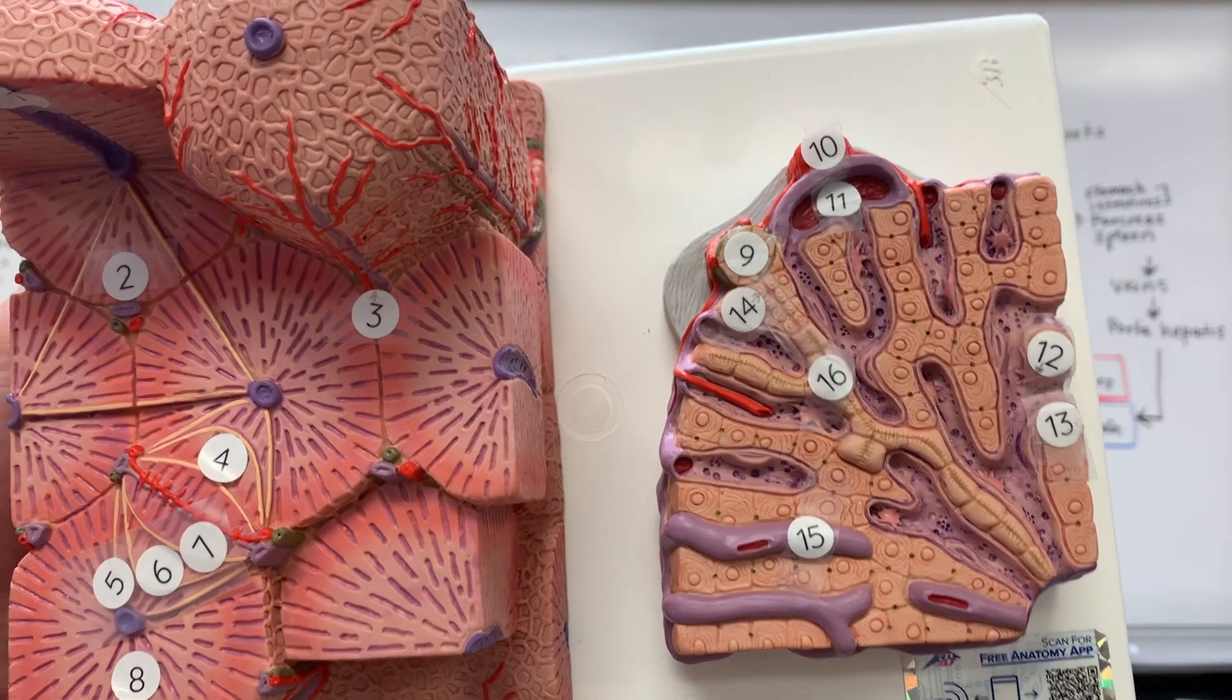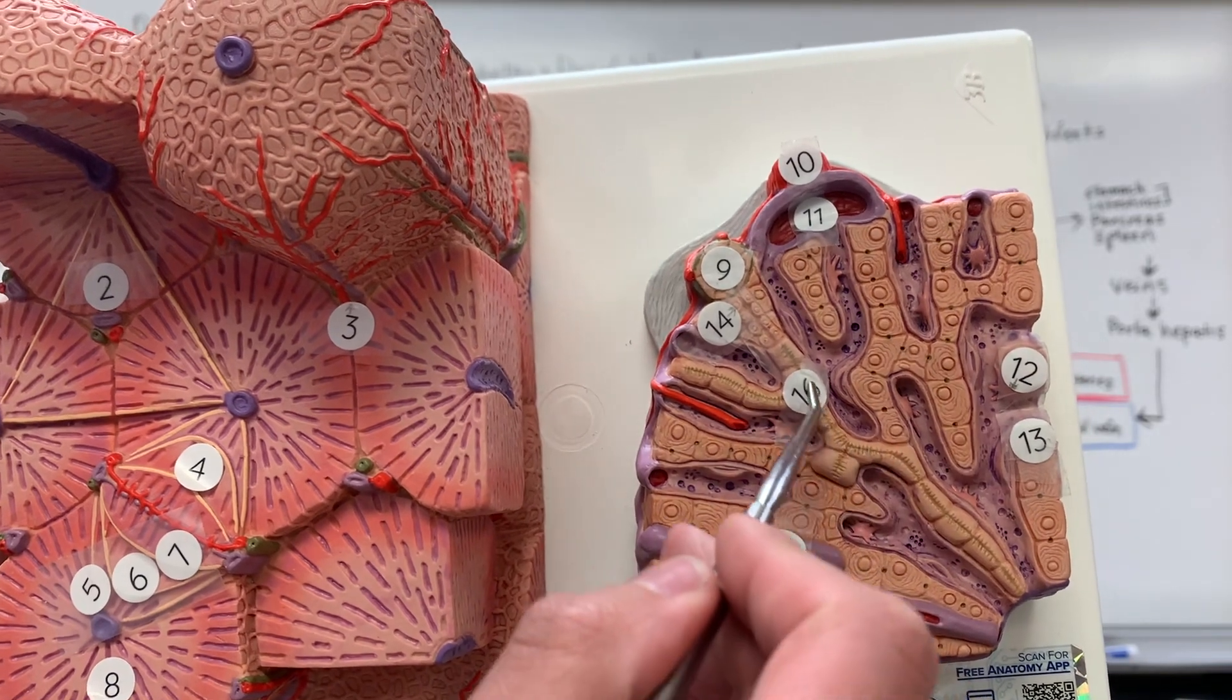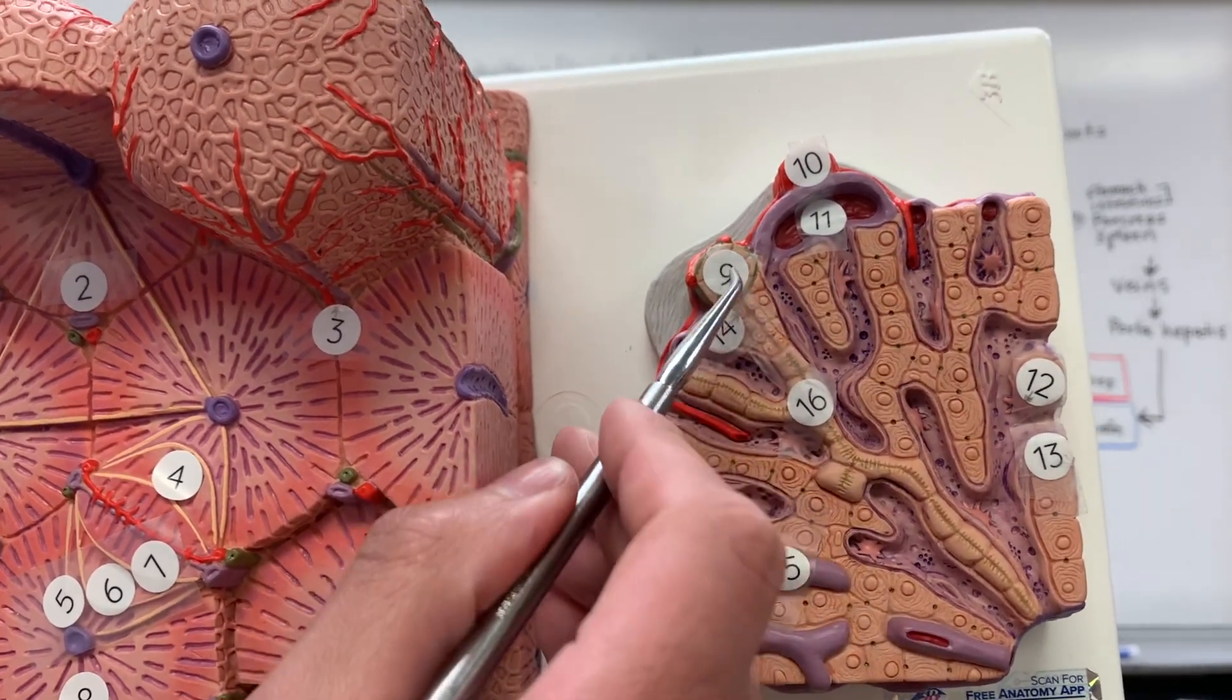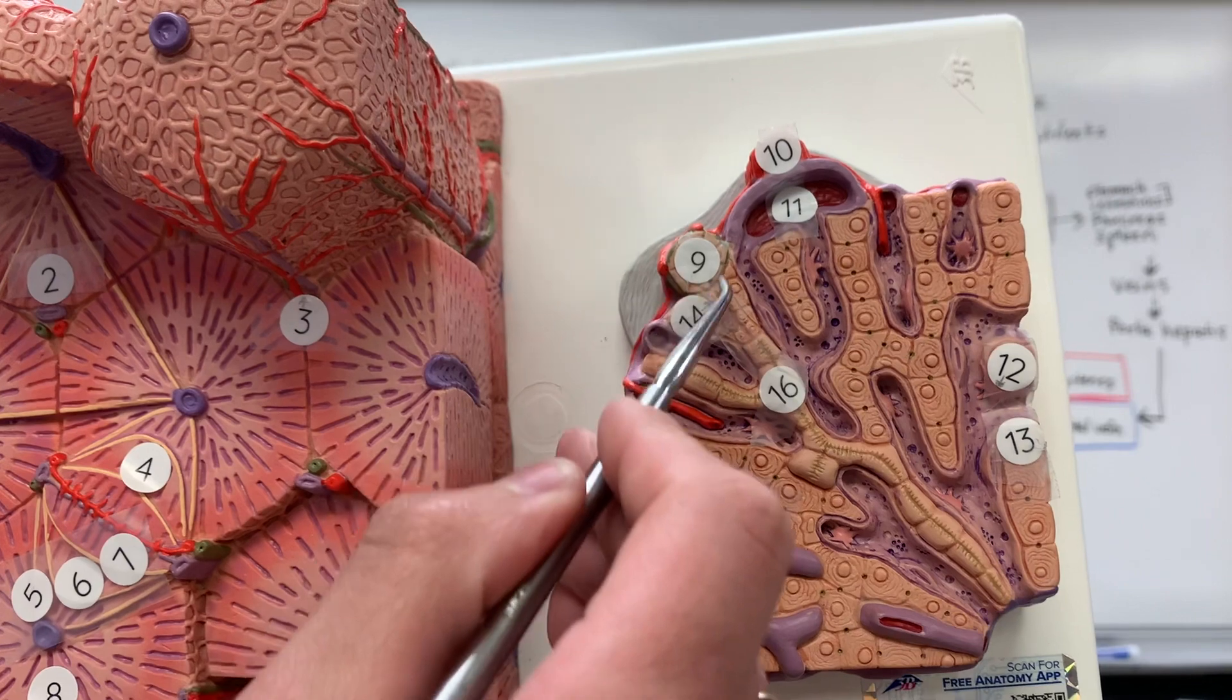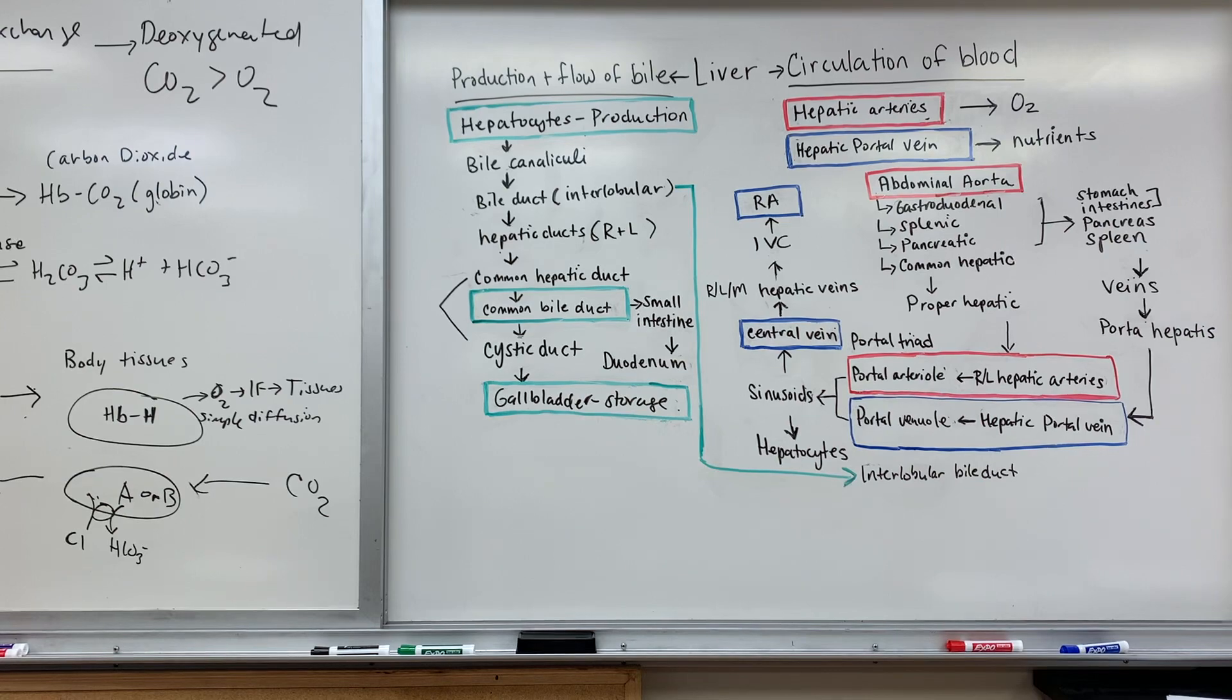So this here is the bile canaliculi, so bile is flowing in this direction, until it gets to the interlobular bile duct. So then from here, this is what will lead to the part within the liver. So if you look here at the liver, you have the right and the left hepatic ducts.